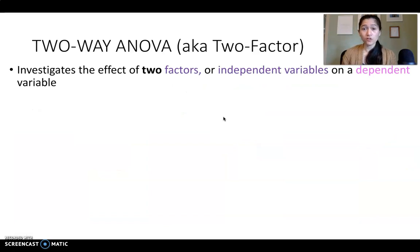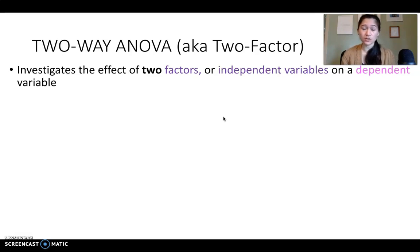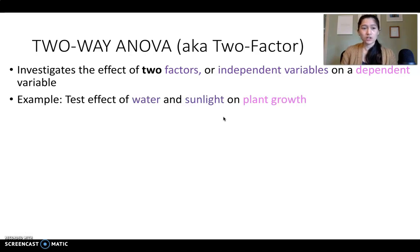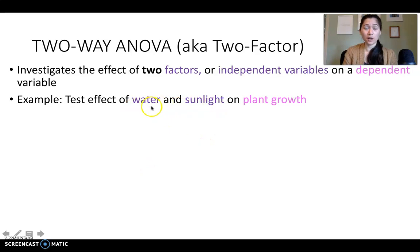For a two-way or two-factor ANOVA, the two-factor part comes in because now you're looking at two different factors or independent variables and seeing what the effect of those are on one dependent variable. So if we build on the same example, now we might want to test both the effect of water and sunlight on plant growth. So now we have two different independent variables — water and sunlight — and our dependent variable is still plant growth.